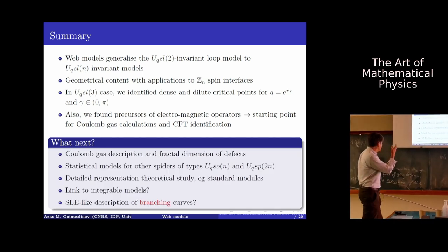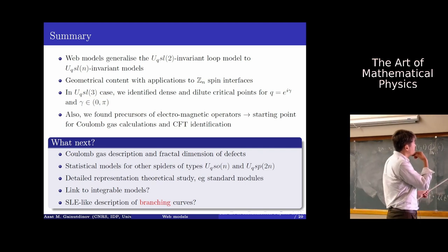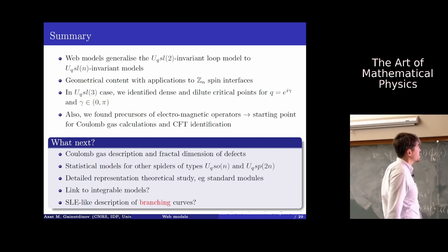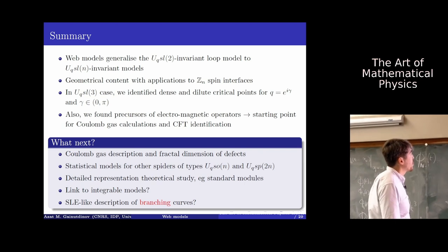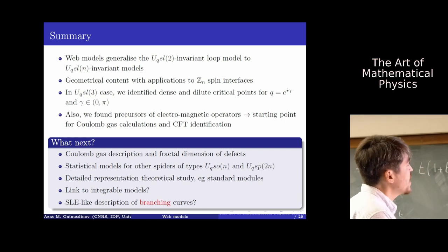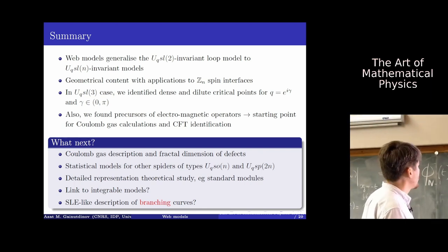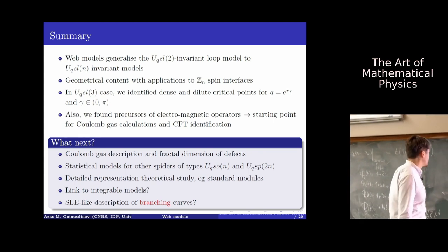What is next? As I said, we are working on a Coulomb gas description. One can also study statistical models for other types of spiders: SO(N) and Sp(2N). We have some work on more detailed representation-theoretic studies, such as the construction of standard modules, with some open problems remaining. It would also be interesting to study a link to integrable models, and to explore an SLE-type description of these branching curves.